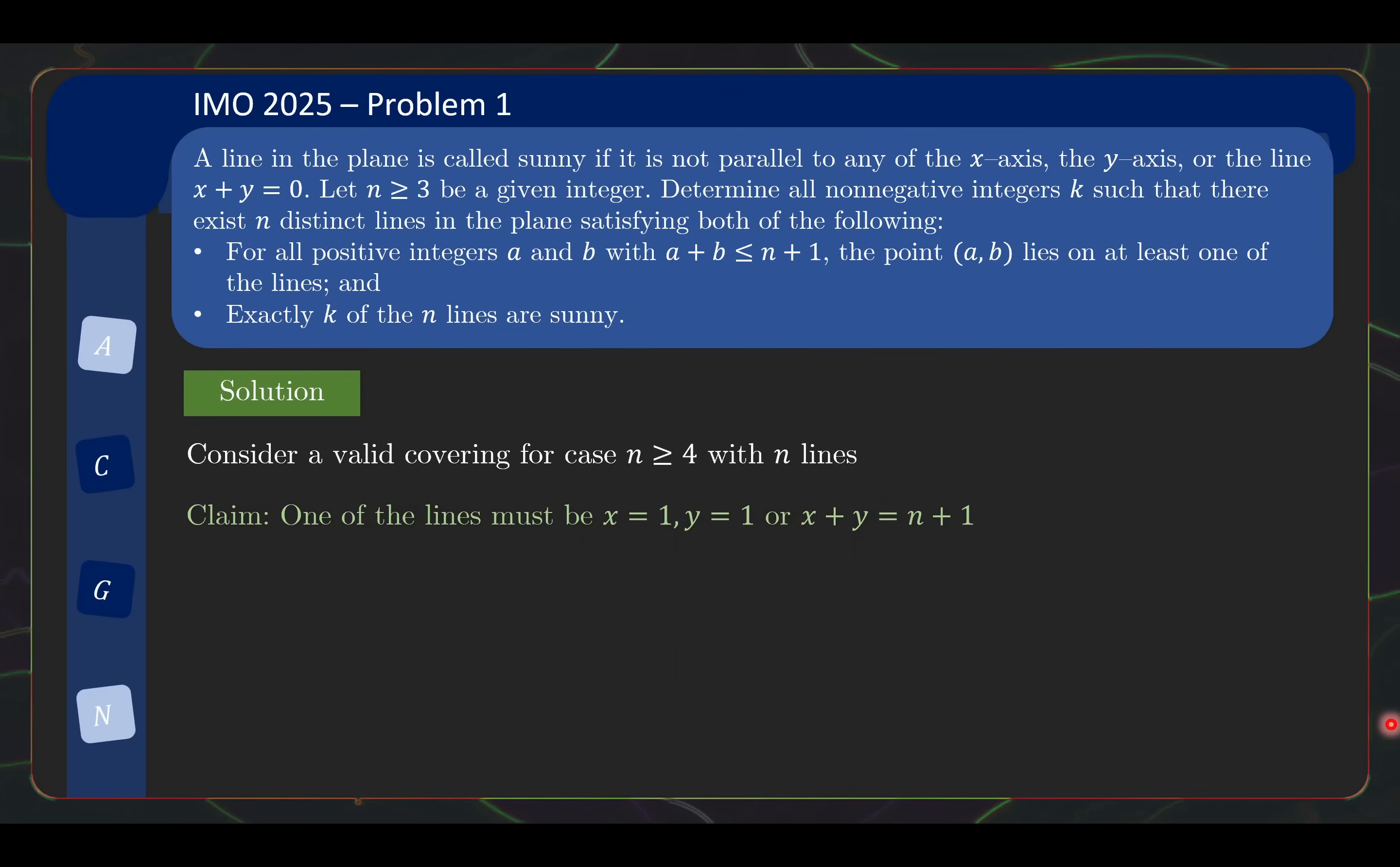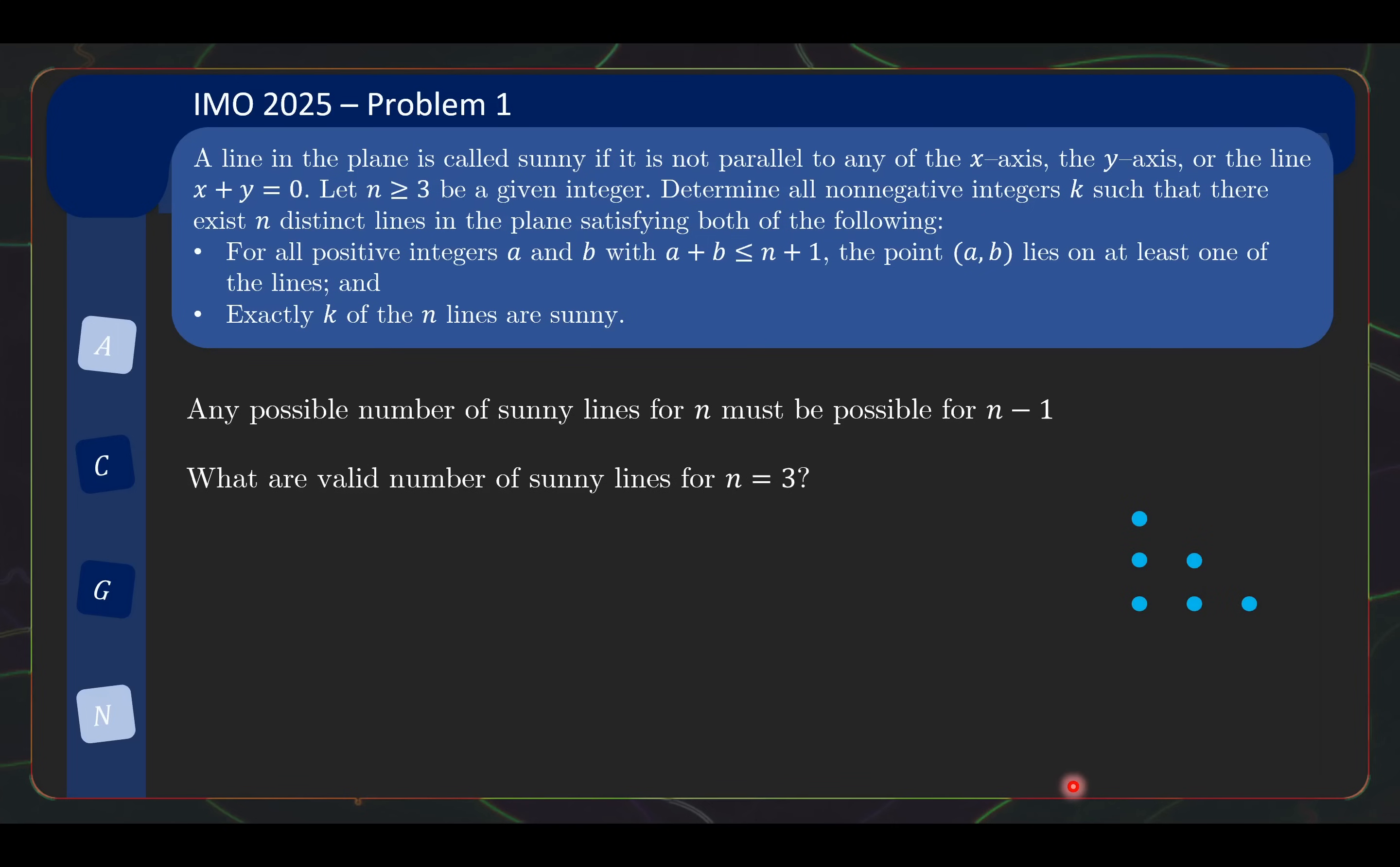So I hope that is clear. It's a bit tricky, but that is the hardest part of the proof. And once we have proven this claim, then we simply remove that particular line x equals one or y equals one or the outermost diagonal line and the points on it, we actually get then a valid covering for the case n minus one with the same number of sunny lines. This tells us that if a number of sunny lines is possible for n, it must also be possible for n minus one. So continuing this downwards all the way to the case n equals three, we ask ourselves what are valid number of sunny lines for n equals three.